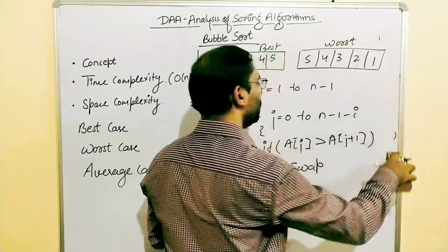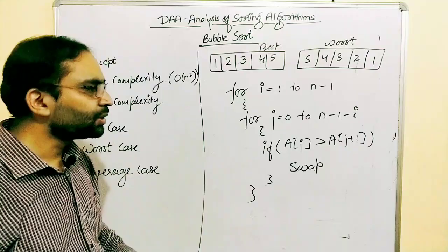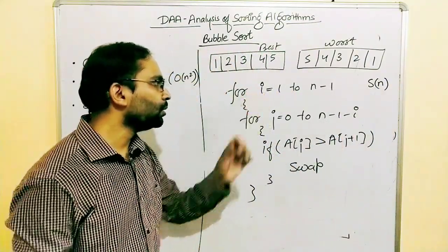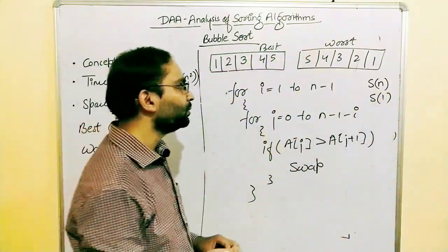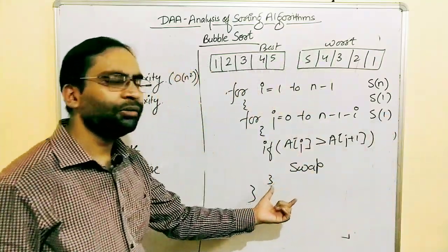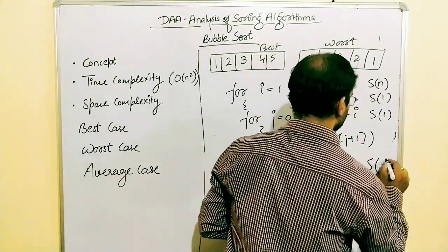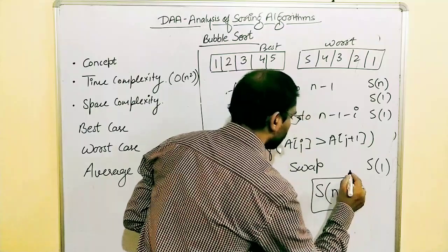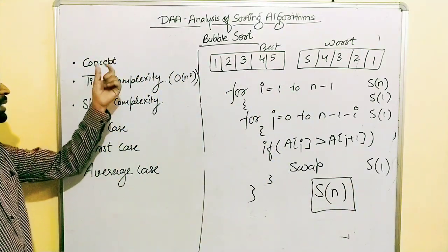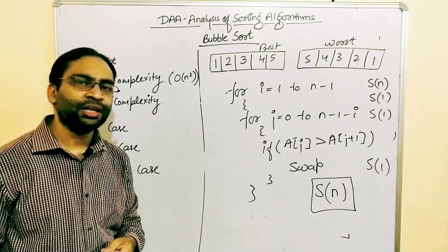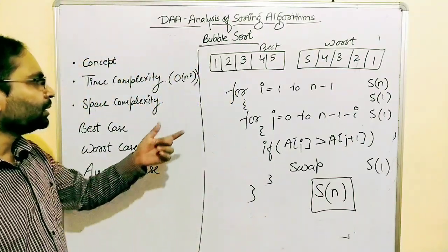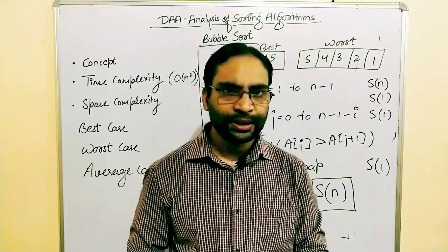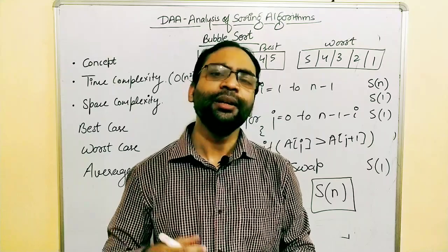For space complexity: storing the n elements requires an array of size n, which is O(n). We also use a few variables — i, j, and a temporary variable for swapping — each of space complexity O(1). The highest term is n, so the space complexity of bubble sort is O(n). This concludes today's lesson on bubble sort concept, time complexity in all cases, and space complexity. In the coming lessons, we'll cover more sorting algorithms.